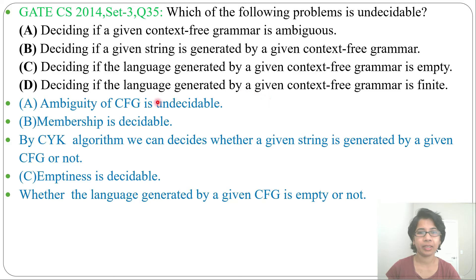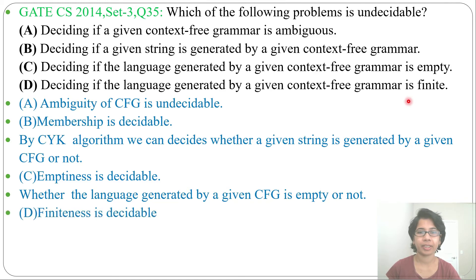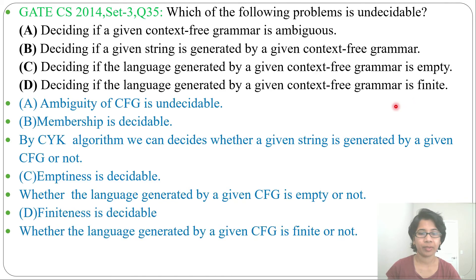Next, option D: deciding if the language generated by a context-free grammar is finite. Finiteness is decidable in the case of a context-free grammar — whether the language generated by a given context-free grammar is finite or not. So we found option A is undecidable, and options B, C, and D are decidable.